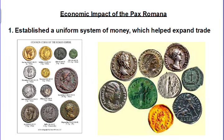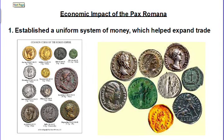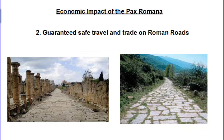Some of the impacts of this Pax Romana: one of the things they did was establish a uniform system of money. You might have talked about the Denarius or the Drachma in class — there are different types of coins — but they established a uniform system. Anytime you have one system of money, this helps expand trade and makes it easier to trade.